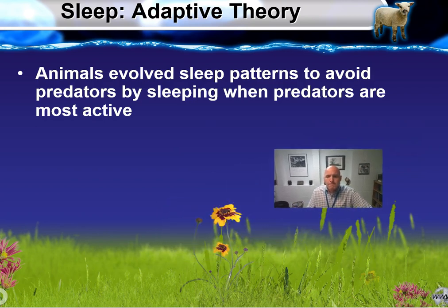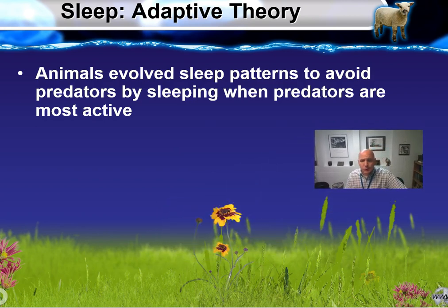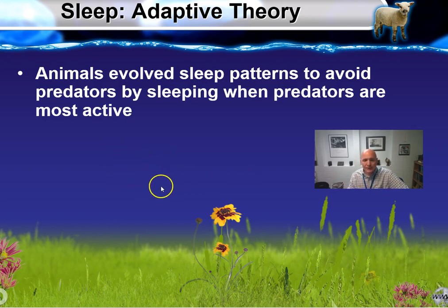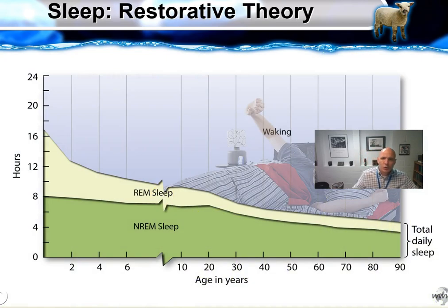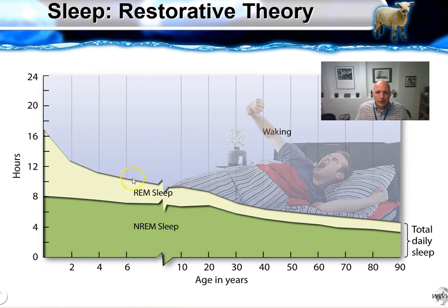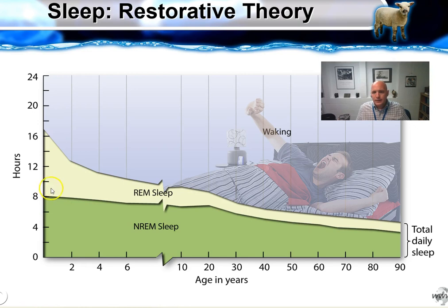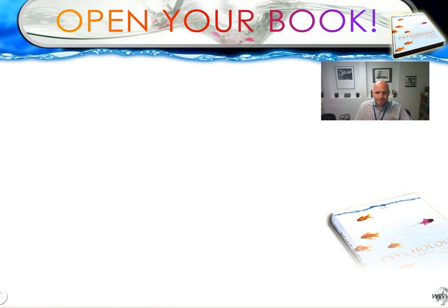There are different theories as to why we sleep at night and wake up during the day. Research indicates most people perform better getting enough sleep at night and being alert during the day. The adaptive theory says we adapted to sleep at night because that's when predators are out. The restorative theory says our brain cells need to repair, and they do so during REM sleep — which happens about 50% of the time during infancy. REM stands for rapid eye movement.